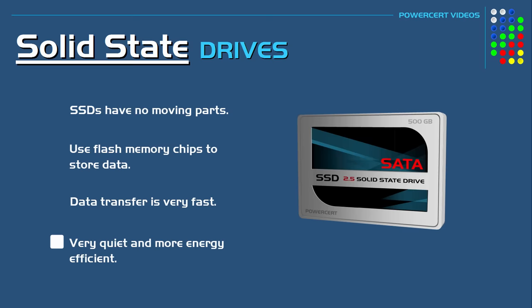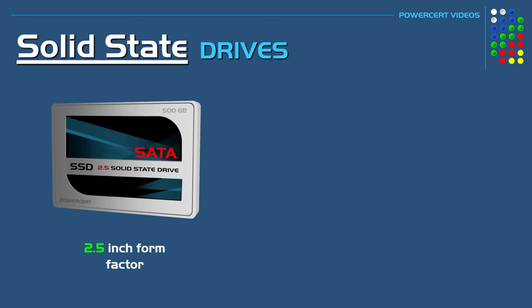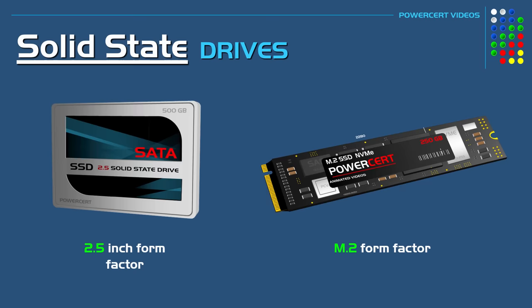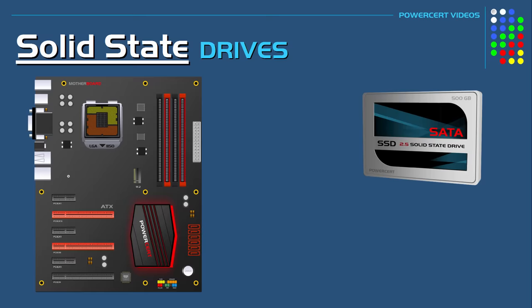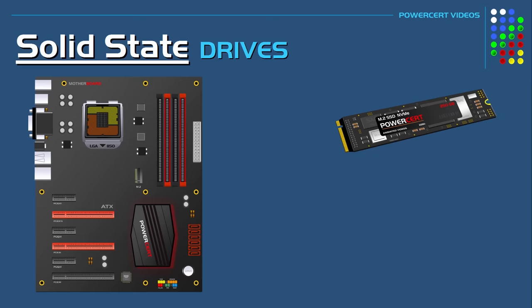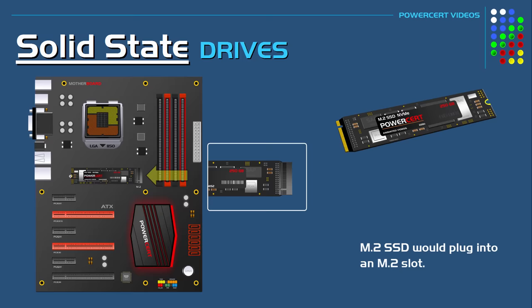SSDs come in different form factors. They come in a standard 2.5 inch rectangular form factor, or the newer M.2 form factor. Both of these drives store data on flash memory, but they connect to the motherboard using different interfaces. The standard 2.5 inch SSD uses the SATA interface, just like a hard drive, while the M.2 SSD plugs into an M.2 slot. There is also a dedicated video about the M.2 SSD linked at the end of this video.